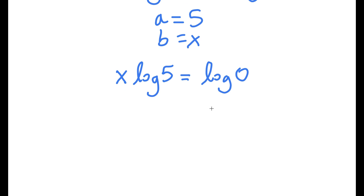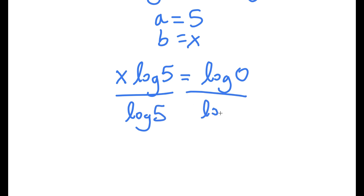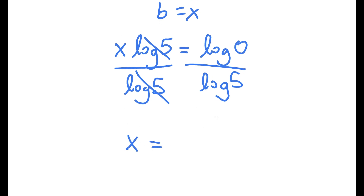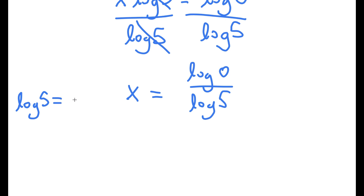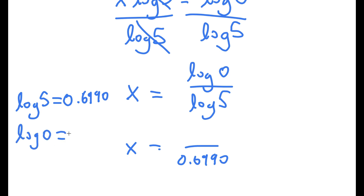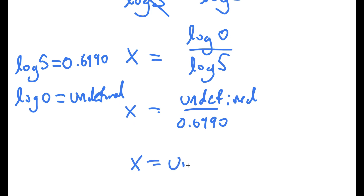From here, I'm going to divide both sides by log 5 to isolate x. These two cancel out, and I'm left with x is equal to log 0 over log 5. Now log 5 equals 0.6990. But log 0 is actually undefined, so x is equal to undefined over 0.6990, meaning x is simply undefined.